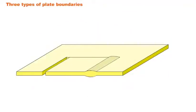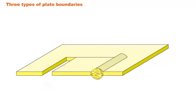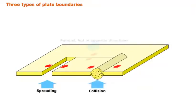This figure shows three different types of boundaries between two plates that move relative to each other. We have plates moving away from each other — they're spreading; plates moving towards each other — they're colliding; and plates moving parallel but in opposite directions. These three types of boundaries can also be observed between the lithospheric plates we've been studying.